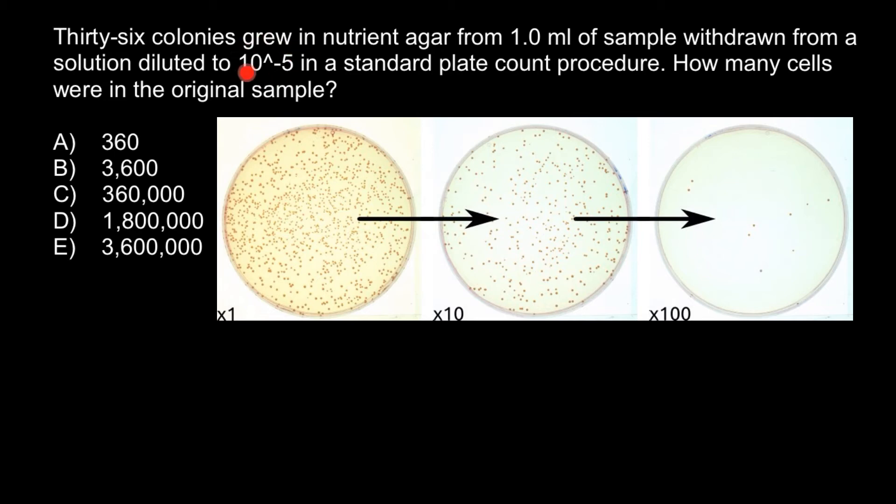We know that our sample was diluted by this number. What does this number represent? This number represents 1 with 5 zeros: 1, 2, 3, 4, 5 zeros—so 100,000.